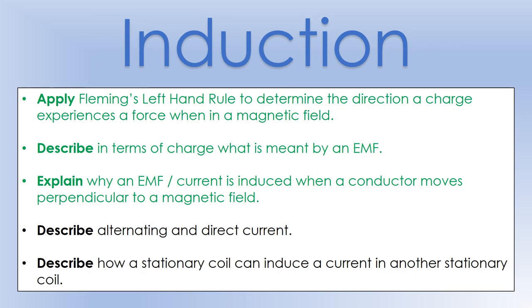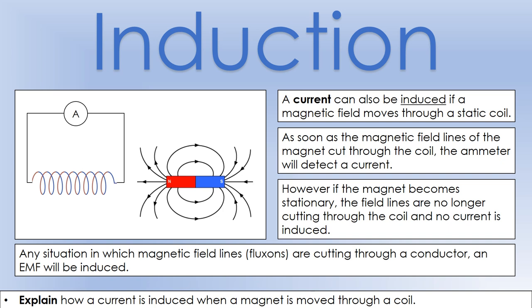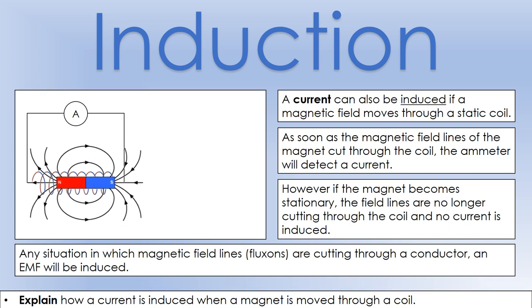Now we'll look at alternating and direct current and how we can induce a current in two stationary coils, which is the basis of wireless charging. If we move a wire perpendicular to a magnetic field, a current or EMF is induced, but we can get the same effect by moving the magnet instead of the coil. As long as there are magnetic field lines — flux lines — cutting through the wire, we will detect a current. If the magnet becomes stationary, we're not going to get an EMF or current anymore.